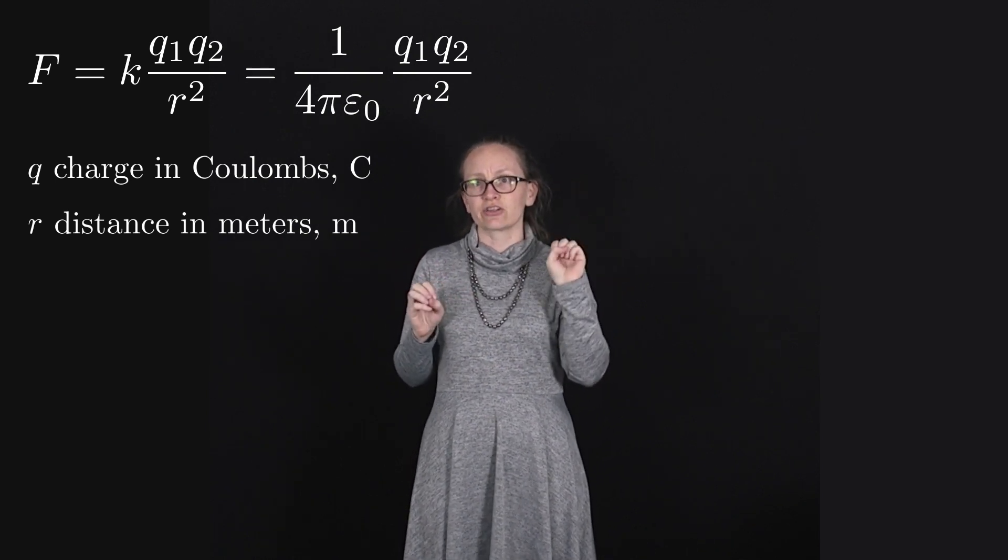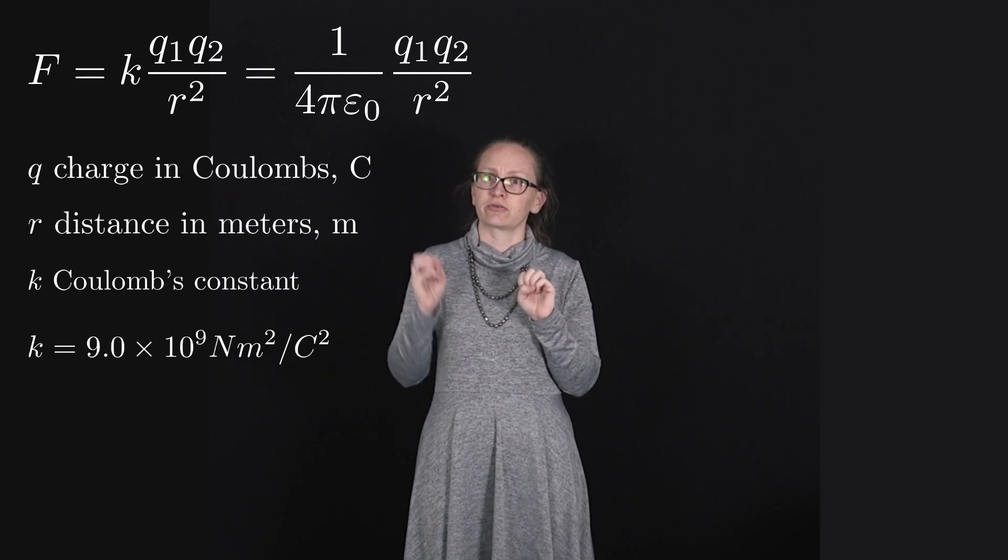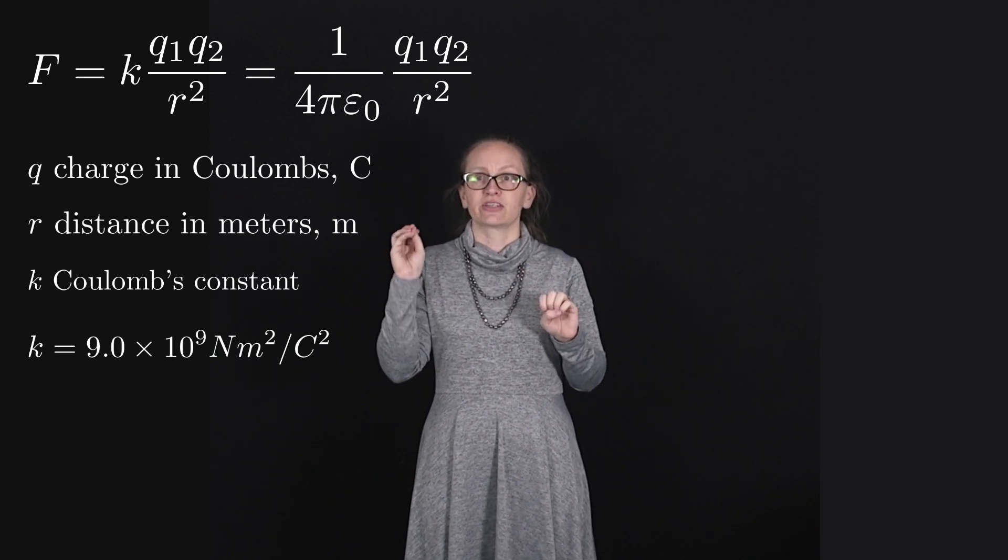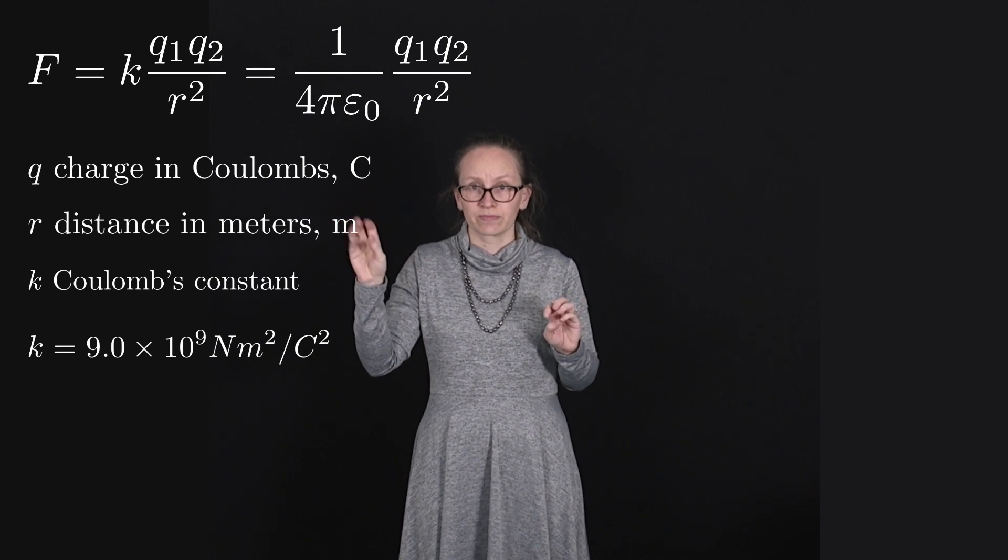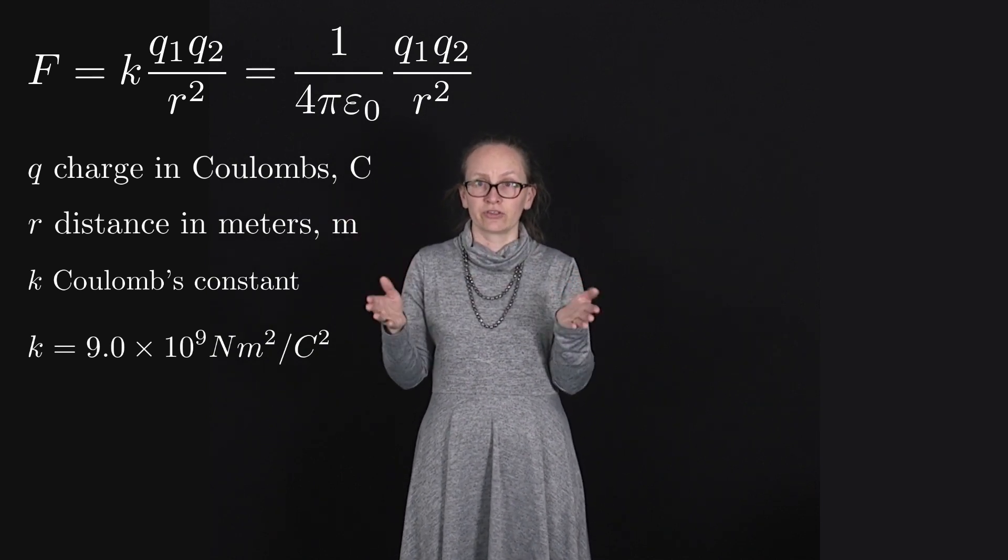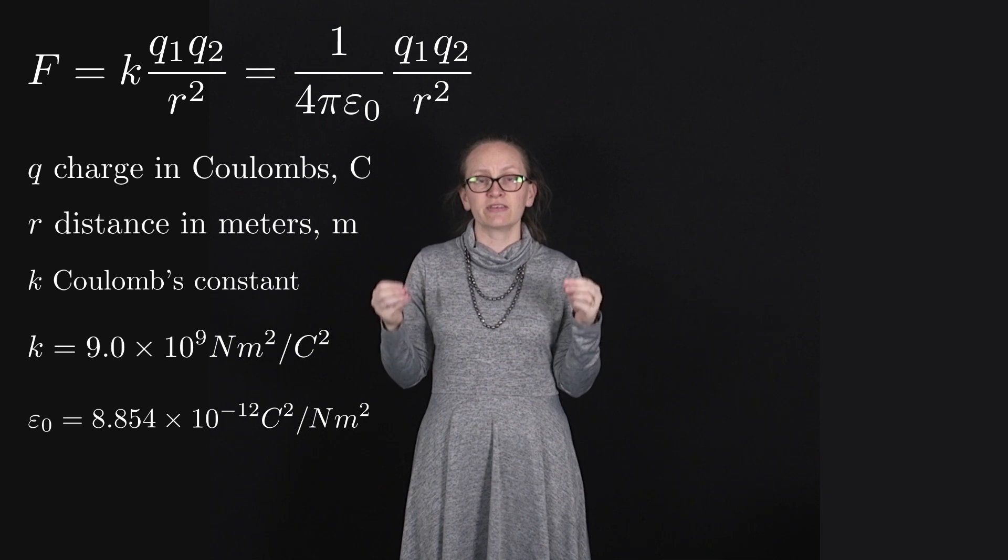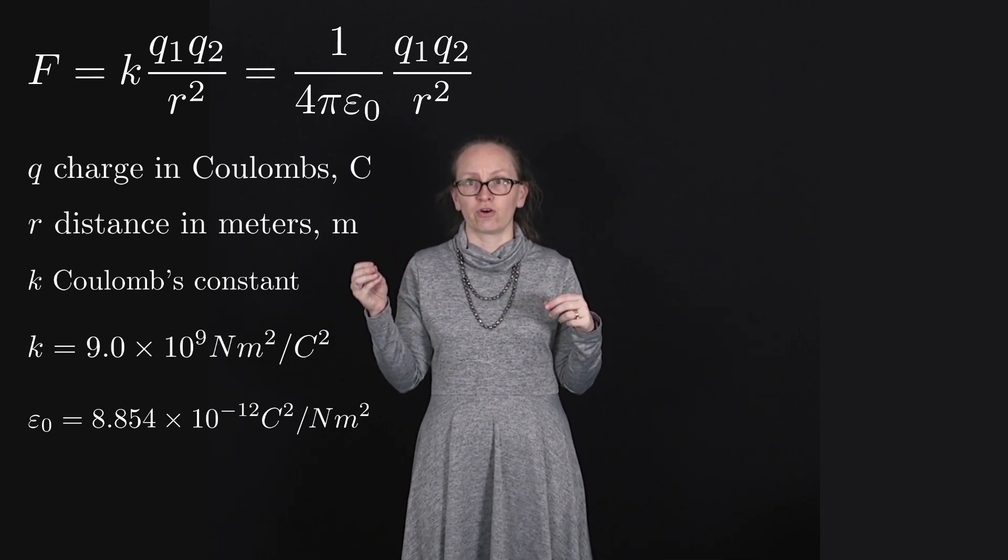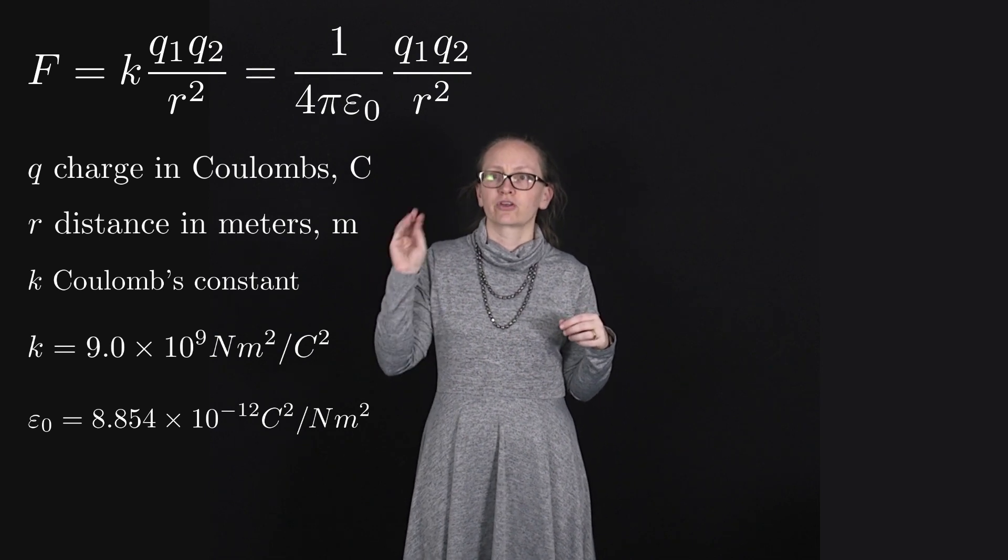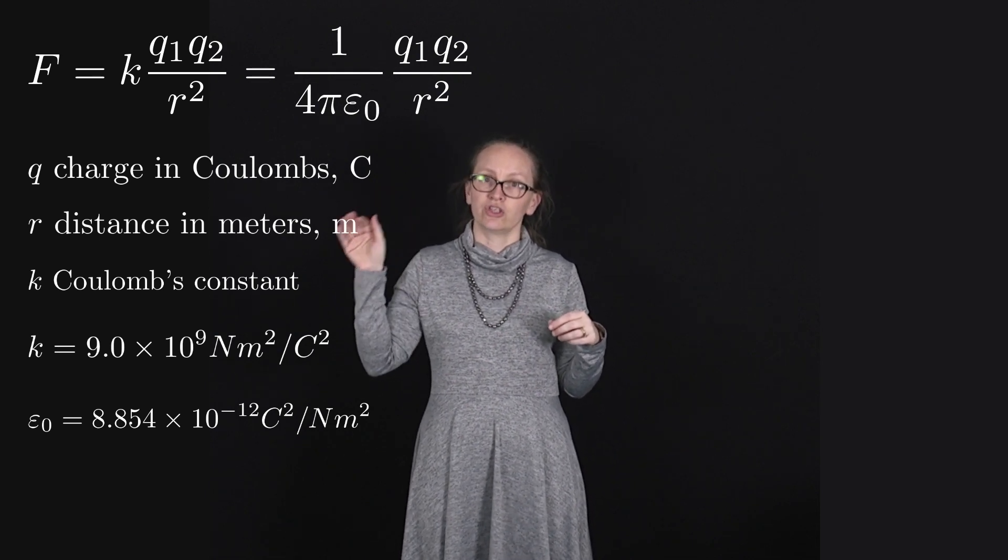When we're using k that's known as Coulomb's constant and it's equal to 9.0 times 10 to the 9 newton meters squared per Coulomb squared, or if we're using epsilon naught that's the permittivity of free space and it is equal to 8.854 times 10 to the minus 12 Coulomb squared per newton meters squared.